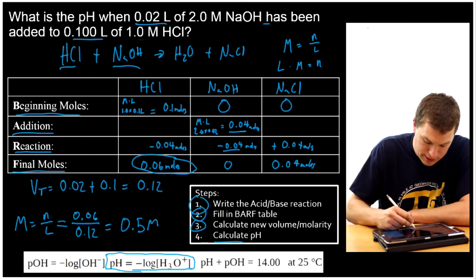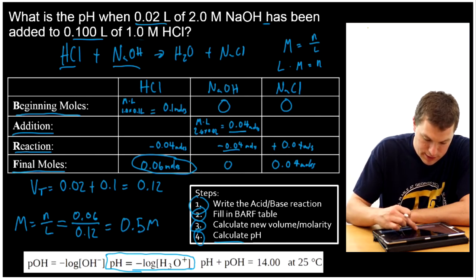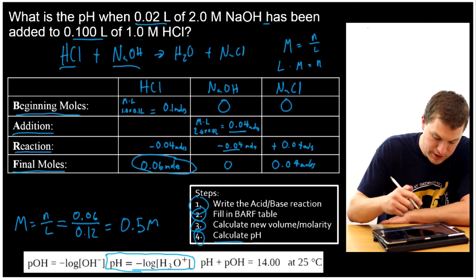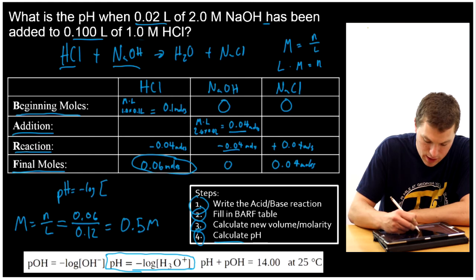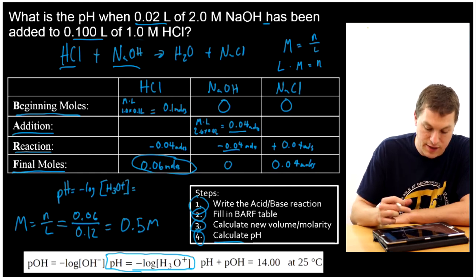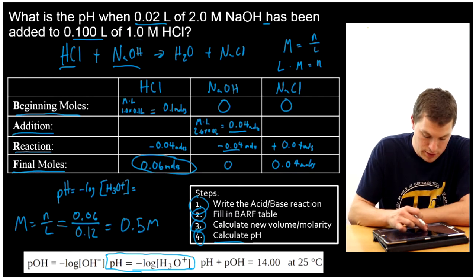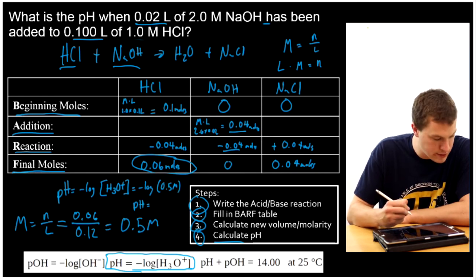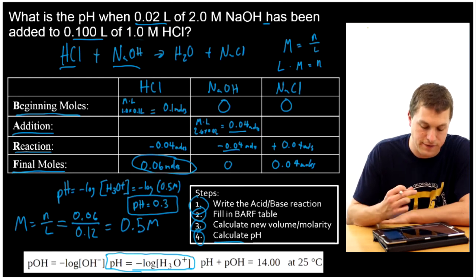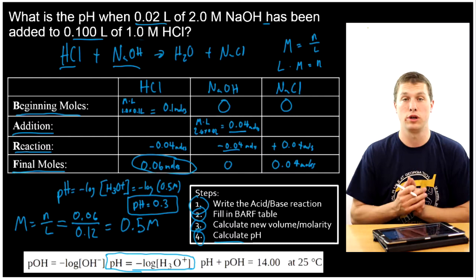Now the last step is to calculate my pH. pH equals the negative log of the concentration of H3O+. Because HCl is a strong acid, those are exactly the same. So pH equals negative log of 0.5 molar, which gives a pH of 0.3. That's the pH in my flask after I've added just a little bit of sodium hydroxide.